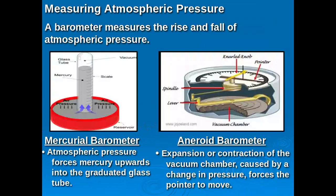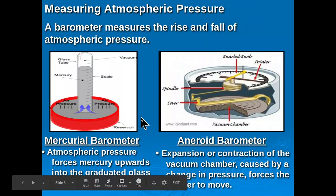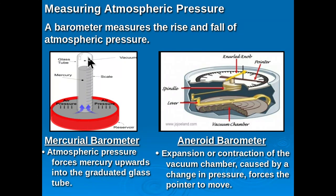Atmospheric pressure can be measured in a couple of ways. It's typically measured using a barometer, which measures the rise and fall of atmospheric pressure. There are two types. The first is the mercurial barometer — a petri dish filled with mercury with a graduated cylinder placed in it. As you ascend in the atmosphere, the mercury reacts to the pressure: when air pressure pushes down, it pushes up the mercury, and you can observe the reading on the graduated cylinder. It's probably not the safest way to measure atmospheric pressure, since mercury could spill.